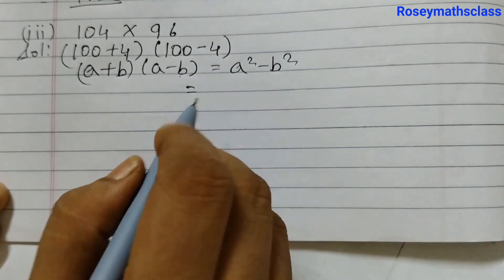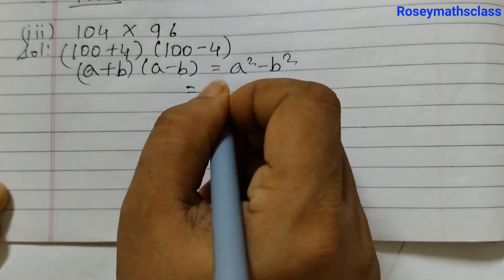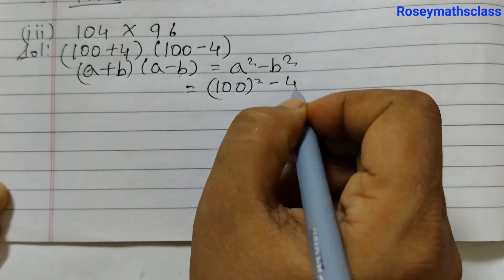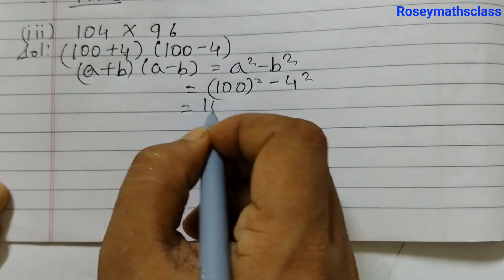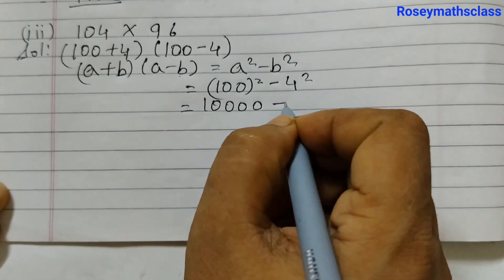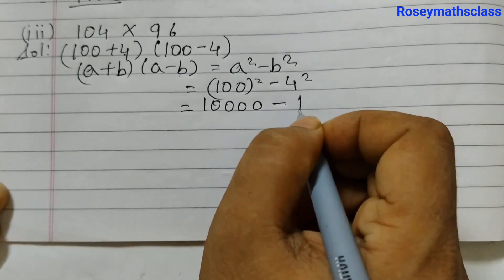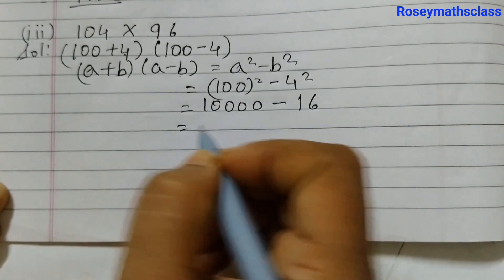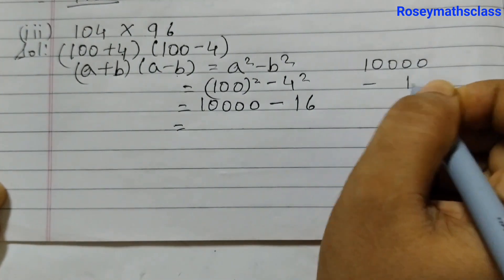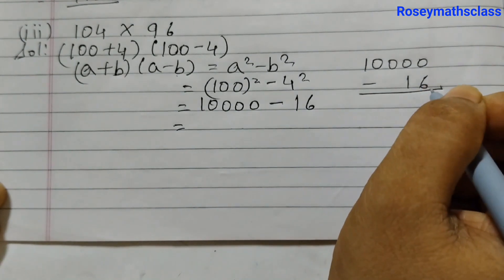That equals to a² - b². So here a is 100, that means 100² minus 4². 100 into 100 is 4 zeros, so that means 10,000 minus 4×4 is 16.